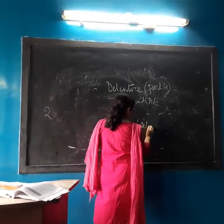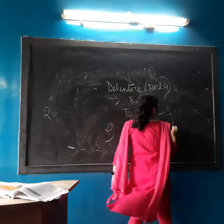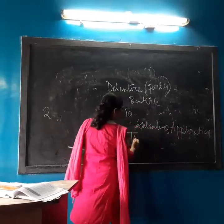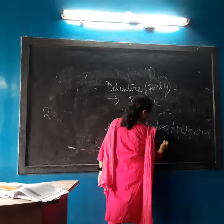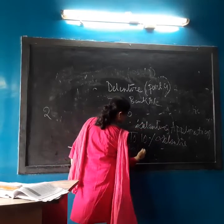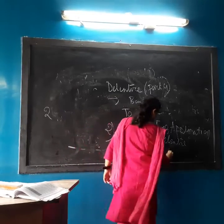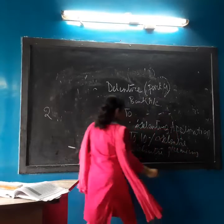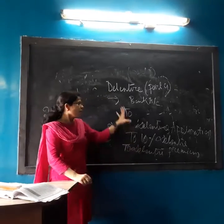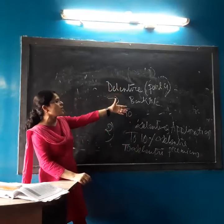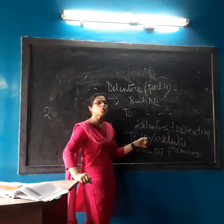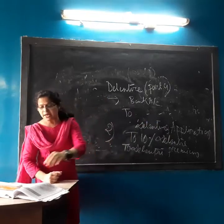The next journal entry will be: Debenture Application Account debit to 10% Debenture Account, and to Debenture Premium Account. So when the debenture is issued at a premium, the Debenture Application Account is debited to 10% Debenture and to the Debenture Premium Account.